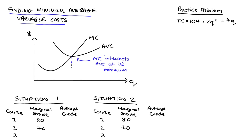Once we do that, we can solve for the quantity associated with that intersection — I'll call that Q_min. And we can also find that level of average variable cost where it's minimized by substituting that quantity back into either marginal costs or average variable costs.